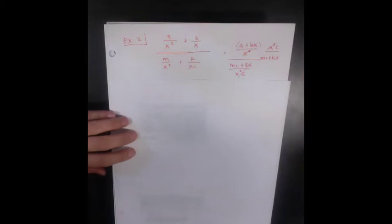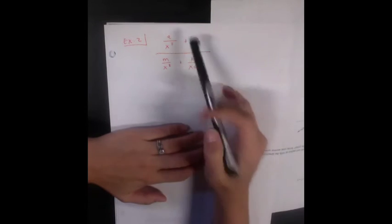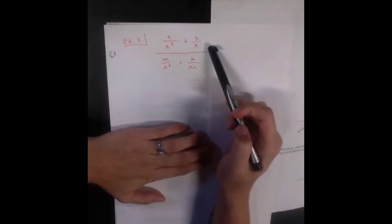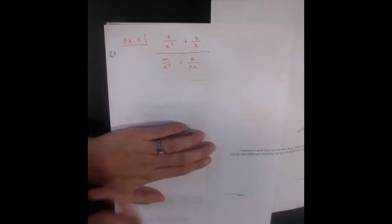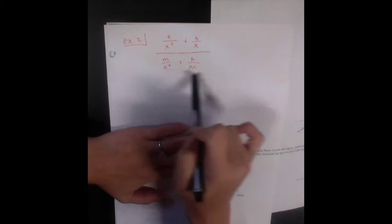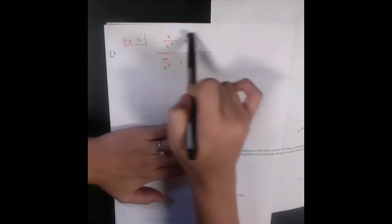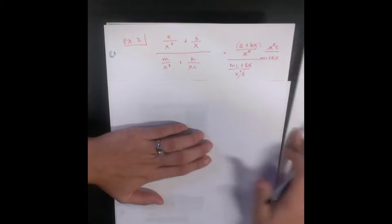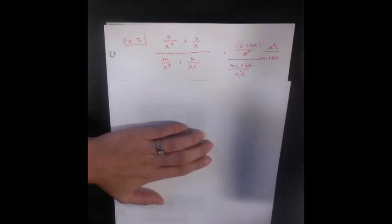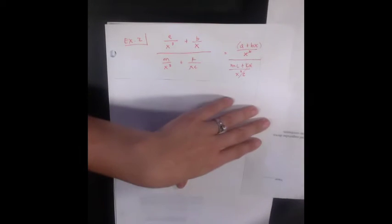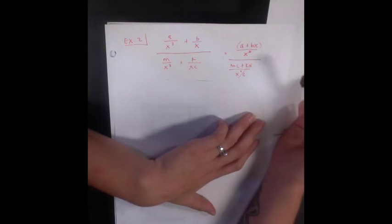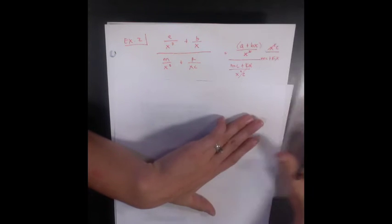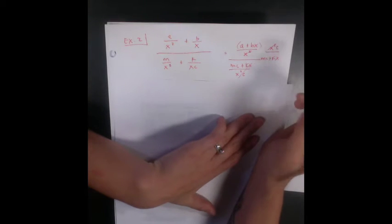We start with a over x squared plus b over x over m over x squared plus k over xc. I want to combine my terms in the denominator and the numerator into one fraction. Looks like this: a plus bx over x squared and mc plus kx over x squared c, and I multiply by the reciprocal of my denominator.